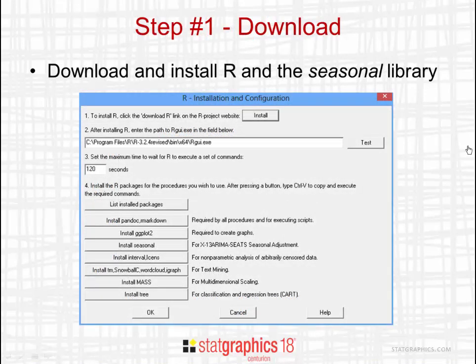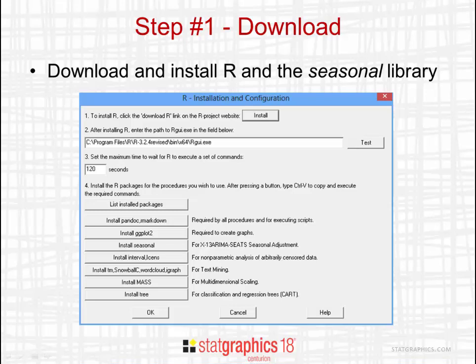Before you can use X13 ARIMA SEATS in StatGraphics 18, you need to download and install R and the Seasonal Library. If you select the R Interface, R Installation and Configuration from the main StatGraphics menu, you'll see this dialog box. Installing R is as simple as pushing the Install button and following the self-explanatory instructions. You'll also need to install Pandoc, R Markdown, and the Seasonal program. If you have any problems, there's a separate video that describes in detail how to install and configure R.